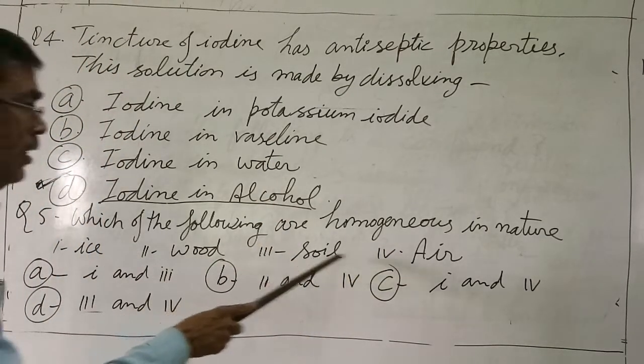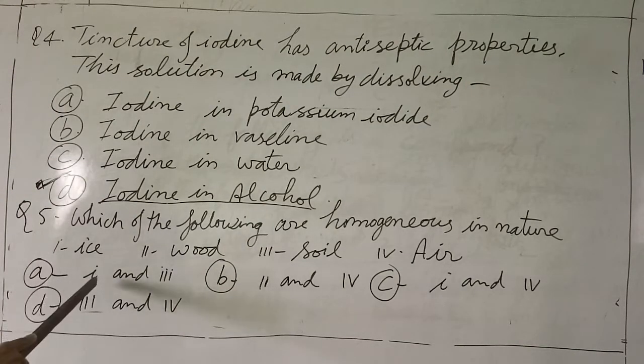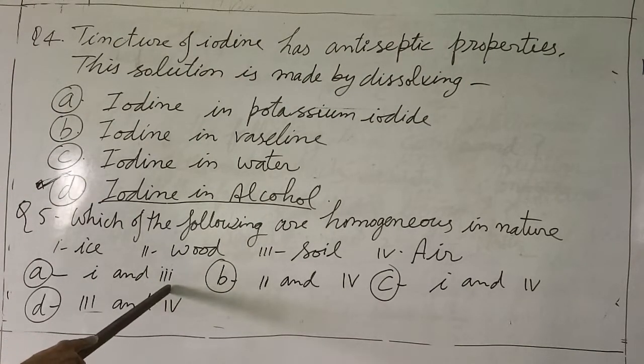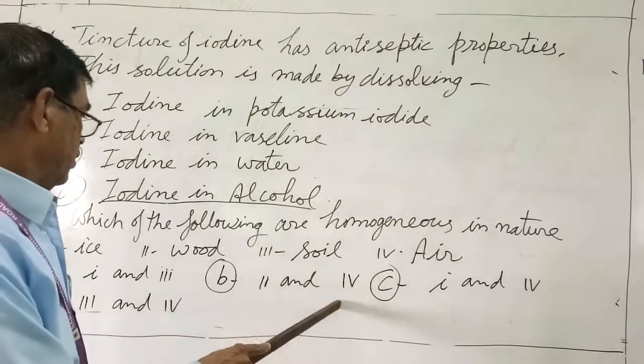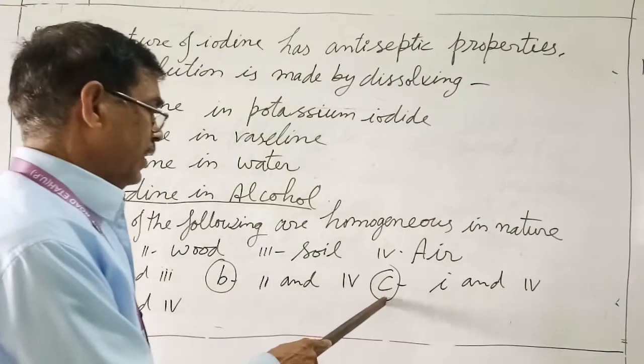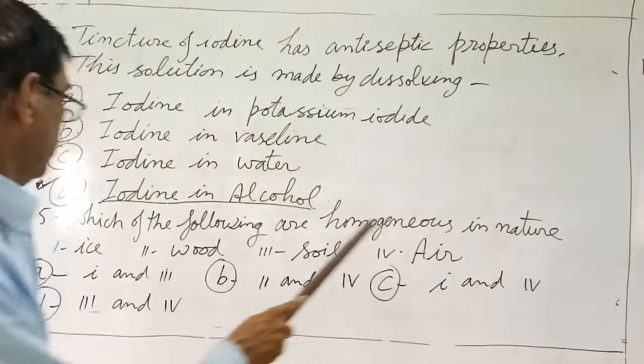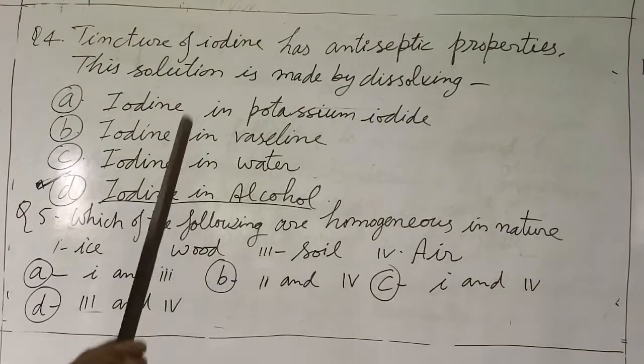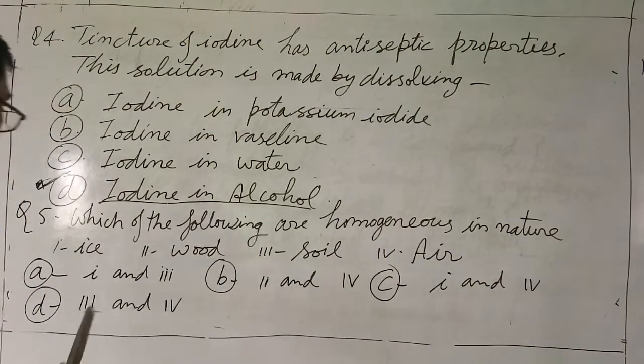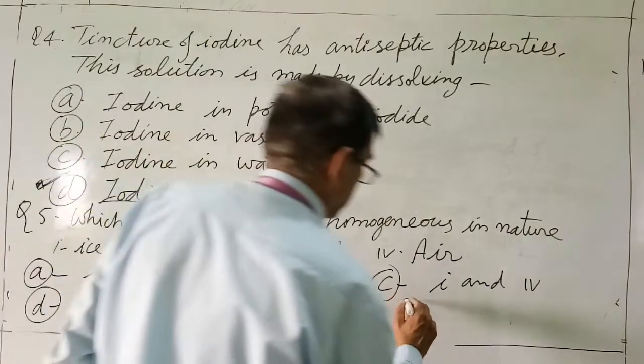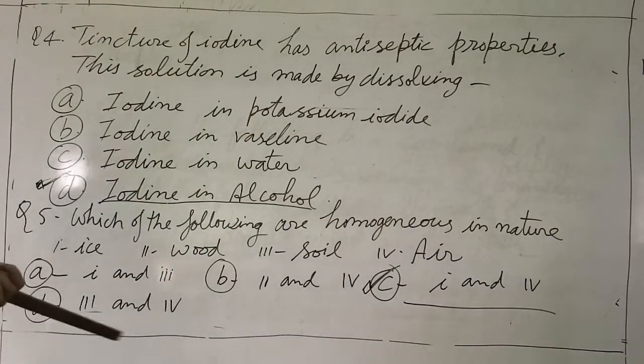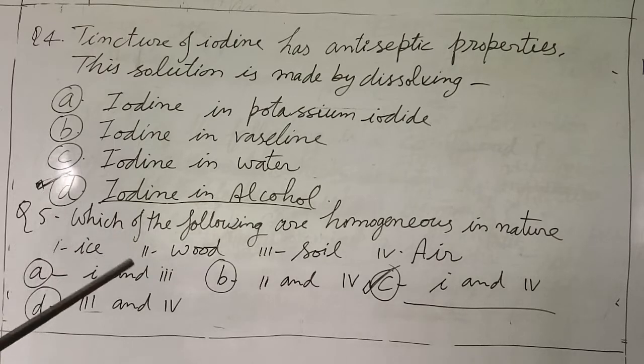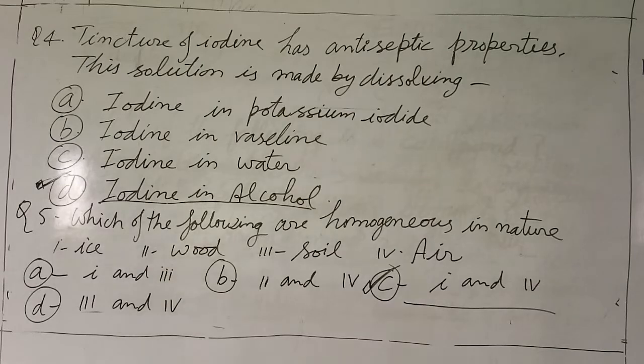Which of the following are homogeneous in nature? Ice, gold, soil, air. First and third - this is not homogeneous. Second and fourth - second would be homogeneous. First and fourth - so this is homogeneous. C, first and fourth. Here answer: C, first and fourth. It is homogeneous mixture.